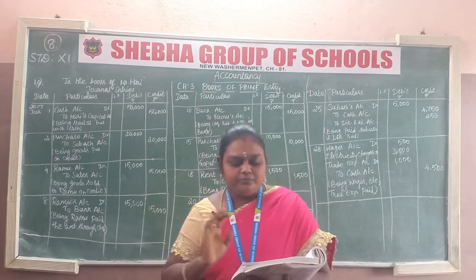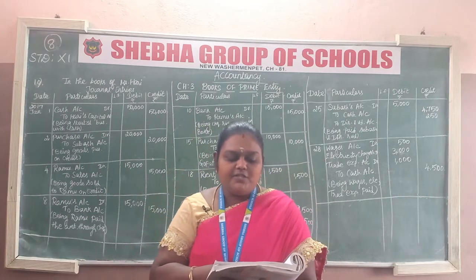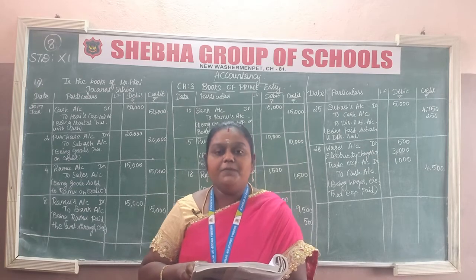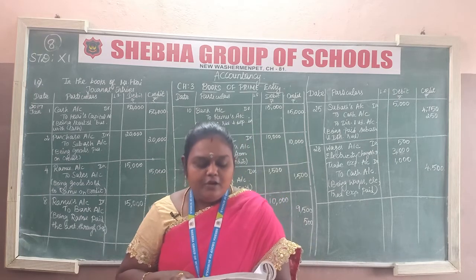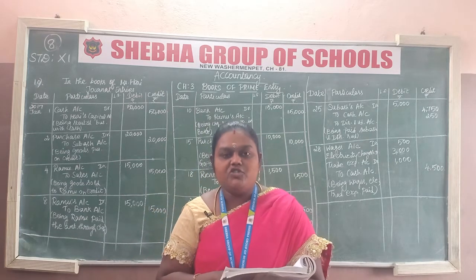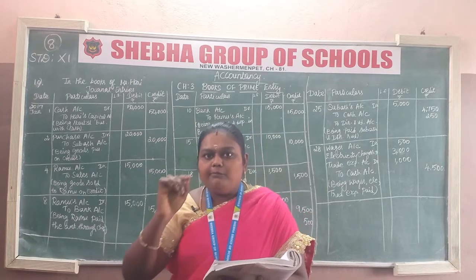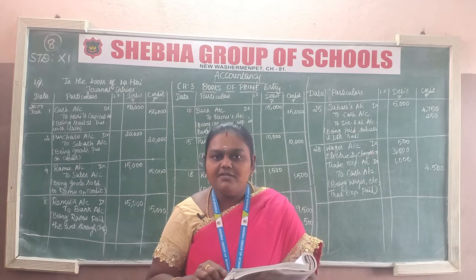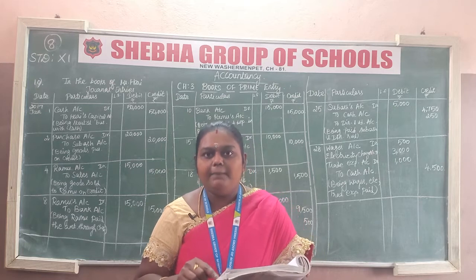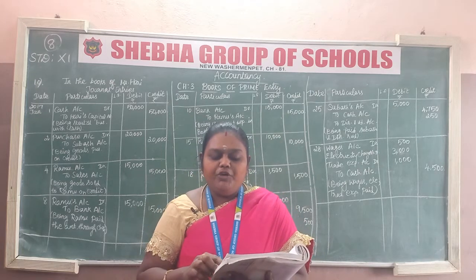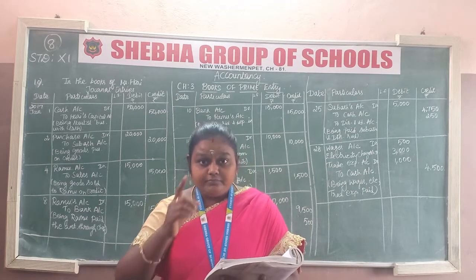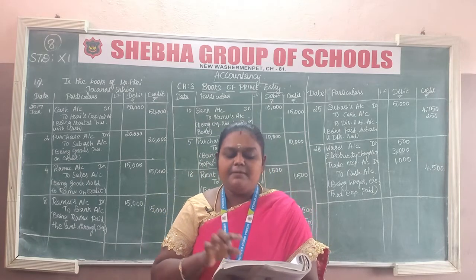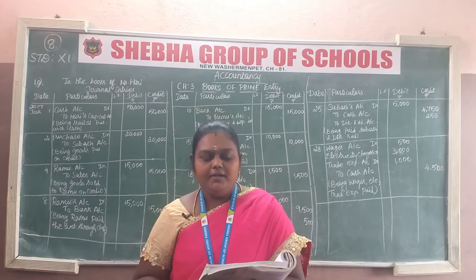Next transaction: purchased goods from Guna and paid through net banking for Rs. 10,000. The entry is the same: Purchase account debit to bank account. Narration: being goods purchased and paid through the net bank.